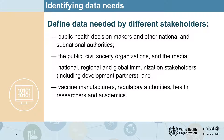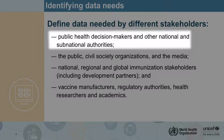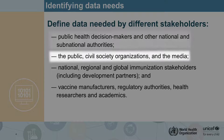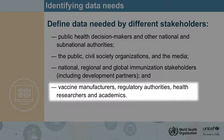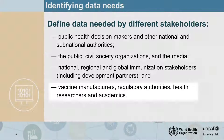The first thing you will have to do is to think through the anticipated needs from different stakeholders. Those include public health decision makers and other national and subnational authorities, but also the public, civil society organizations, and the media, as well as national, regional and global stakeholders such as development partners and international organizations like WHO, vaccine manufacturers, regulatory authorities, health researchers and academics. All of them might have an urgent and critical demand for data that national programs should be able to provide.